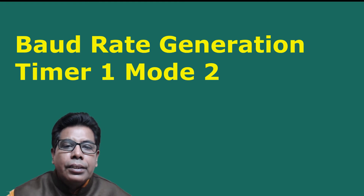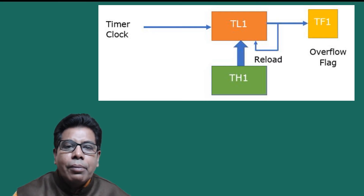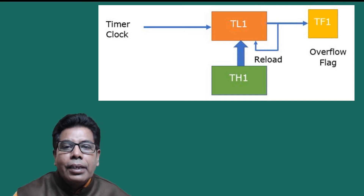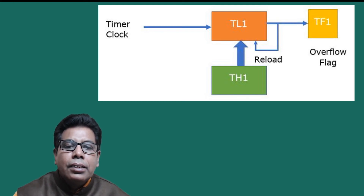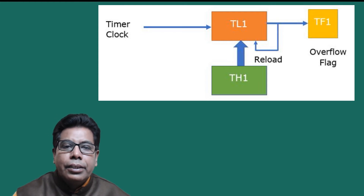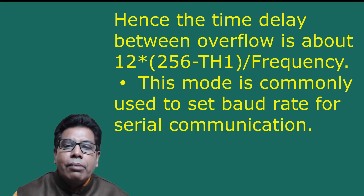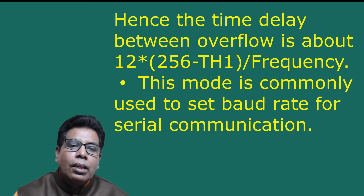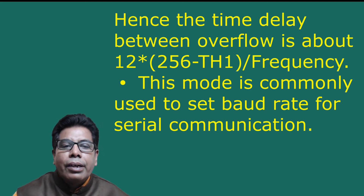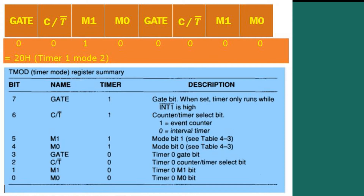For baud rate generation using Timer 1 Mode 2: in this mode the timer acts as an auto reload timer. TH1 holds the reload value and TL1 acts as an 8-bit timer. When TL1 reaches FFh and is subsequently incremented, instead of resetting to 00, it resets to the value stored in TH1. Hence the time delay between overflows is: 12 × (256 − TH1) / frequency. This mode is commonly used to set the baud rate for serial communication.